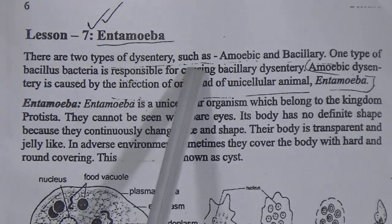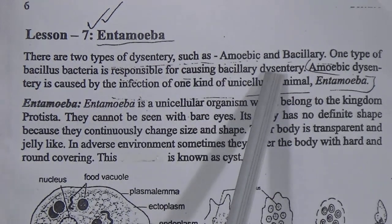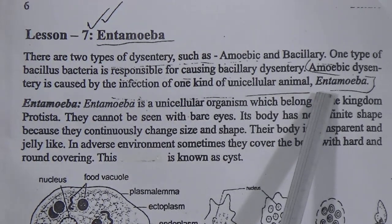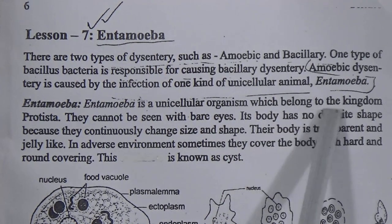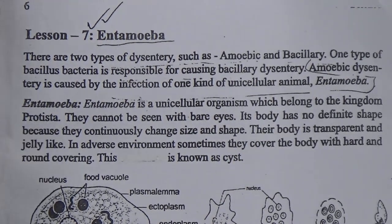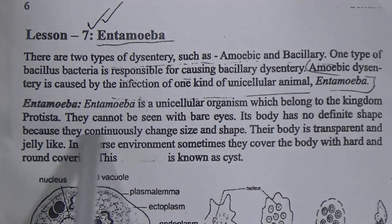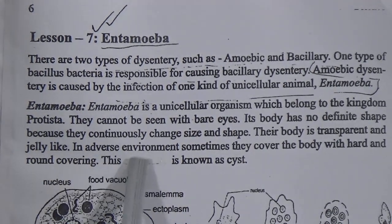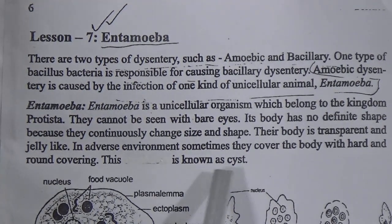Lesson 7: Antamoeba. There are two types of dysentery — amoebic and bacillary. One type of bacillus bacteria is responsible for bacillary dysentery. Amoebic dysentery is caused by the unicellular organism Antamoeba, which belongs to the kingdom Protista. It cannot be seen with bare eyes. Its body has no definite shape as it continuously changes size and shape. Its body is transparent and jelly-like. In adverse environments, it covers its body with a hard round covering known as cysts.